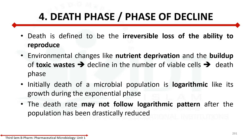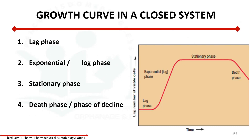So this is all about the growth phase. The growth curve has time on the x-axis and the log number of viable cells on the y-axis. That's all about the growth curve of microorganisms in a closed system.